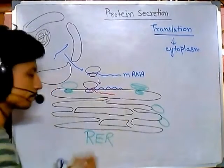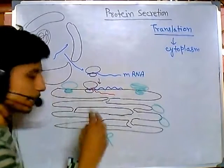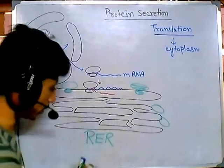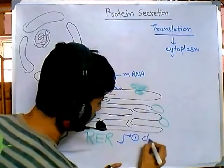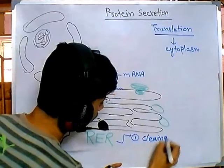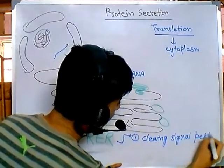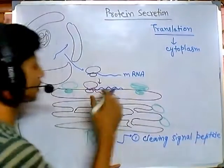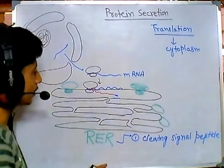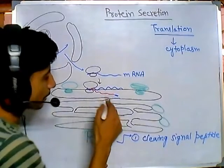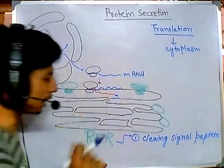Once the protein chain is made, it is inserted inside the rough endoplasmic reticulum lumen. There are two important factors inside this RER. The first factor is cleaving off the signal peptide. Once the protein is synthesized, there is a signal peptide present at the terminal part, and once protein synthesis is completed, that signal peptide is cleaved — that is the first thing to occur inside the lumen of the RER.